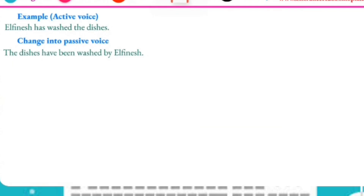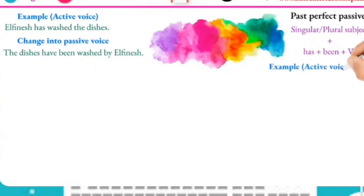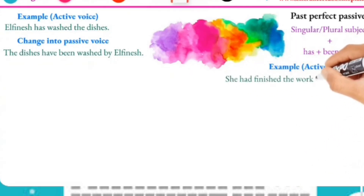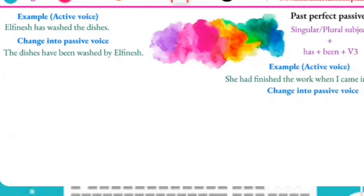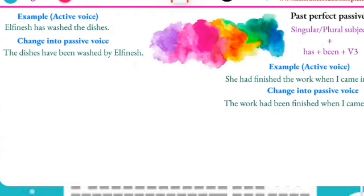Finally, the past perfect passive. The formula for singular and plural subjects is: subject plus had plus been plus verb three. For example: 'She had finished the work when I came in' — active form. The passive form is: 'The work had been finished when I came in.'